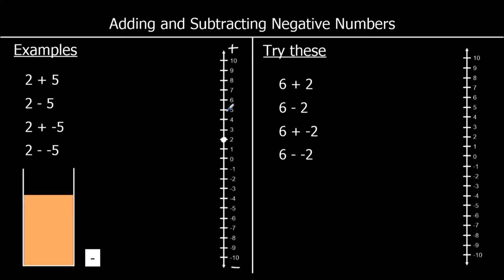Counting up 5 spaces from 2 gives us 7. For the second one, we're starting at 2, going down the number line by 5 spaces — and that gets us to negative 3.